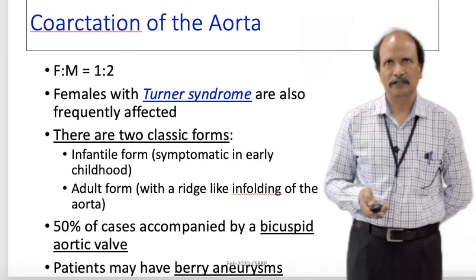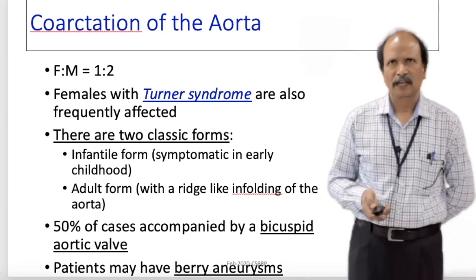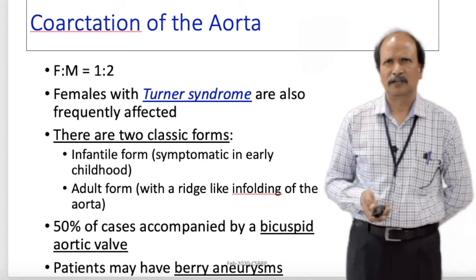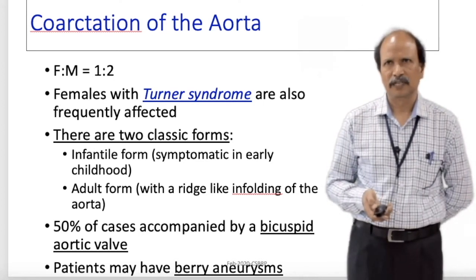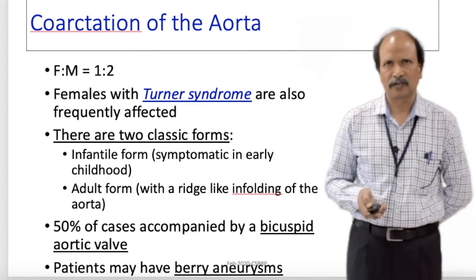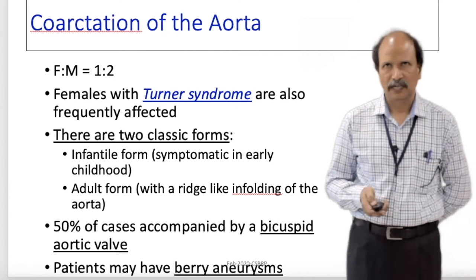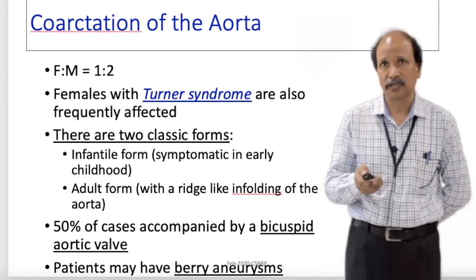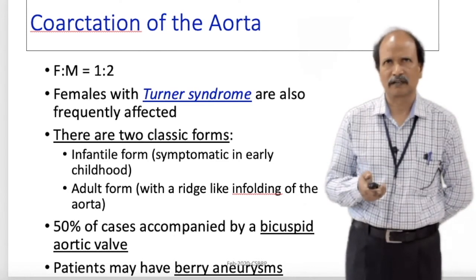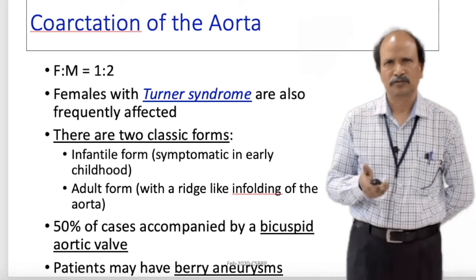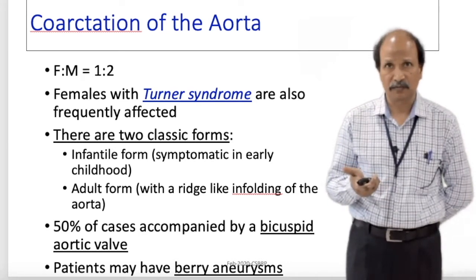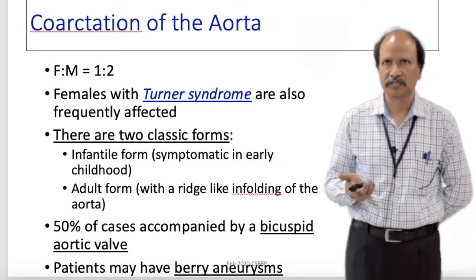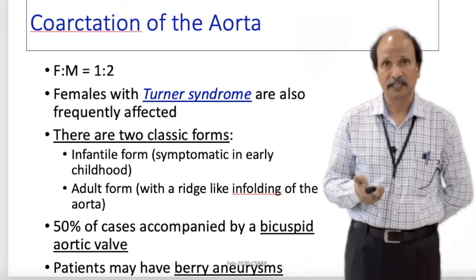Coarctation of aorta is more commonly seen in males and is the most common congenital anomaly associated with Turner syndrome. There are two classical forms: the infantile form and the adult form. Fifty percent of coarctation of aorta cases are associated with bicuspid aortic valves, and they also have what is known as berry aneurysms involving the circle of Willis — this is also very clinically important. So bicuspid aortic valve, berry aneurysms, and association with Turner syndrome are the key associations to remember with coarctation of aorta.